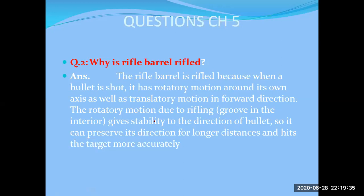Number one, it gives stability to the direction of the bullet, so it can preserve its direction. For long distances, this hits the target more accurately. So the benefit is: it gives stability, maintains direction, and increases accuracy. This is the purpose of rifling the barrel.